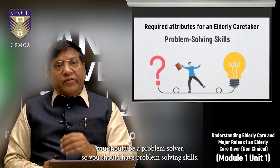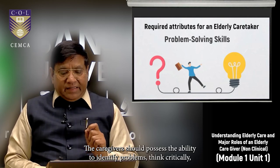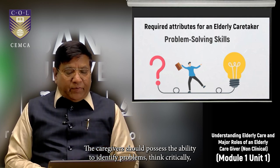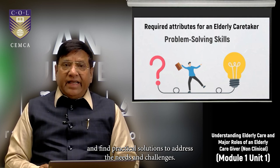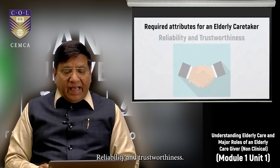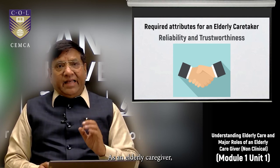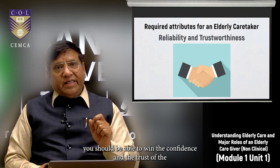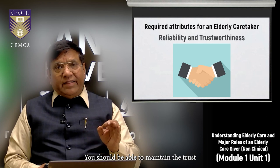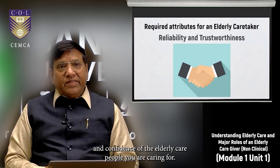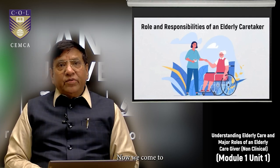Caregivers should be mindful of personal boundaries and cultural sensitivities, showing respect for privacy and dignity. You should also have problem-solving skills — the ability to identify problems, think critically, and find practical solutions to address the needs and challenges of elderly people. Reliability and trustworthiness are also very important; as an elderly caregiver you should be able to win and maintain the confidence and trust of the elderly people you are caring for.